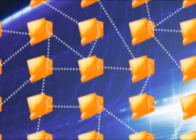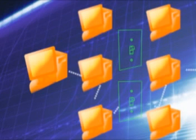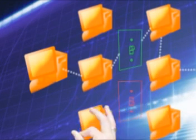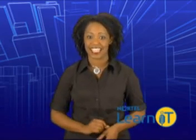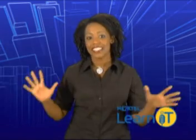Once you make that connection, you can then request information stored on a network you are not currently a part of. If you are allowed access to this network, your computer can activate one of these internet connections, or switches, to open the path to your desired data. Because the internet is actually a series of individual computers and networks that can be connected to each other and disconnected as needed, it provides a massive store of information, media, and interactivity, all at your fingertips.